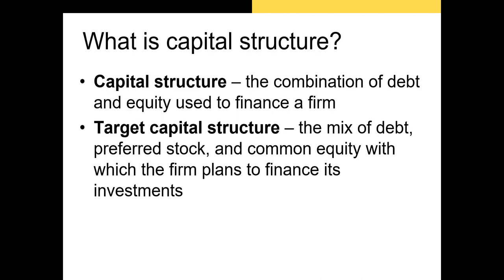Capital structure can be thought of as the combination of debt and equity used to finance a firm's operations. Some firms prefer to issue more debt than equity, while others choose the exact opposite. Some firms target a specific debt-to-total-assets ratio or debt-to-equity ratio, while others let their capital structure fluctuate through time.